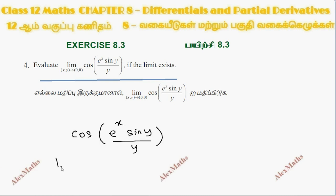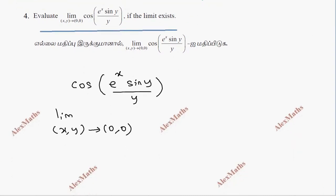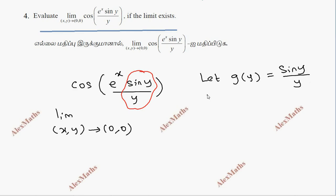This is the limit as (x, y) tends to (0, 0) — this is what we need to evaluate. Let g(y) equal sin(y) divided by y. This is the limit as (x, y) tends to (0, 0).